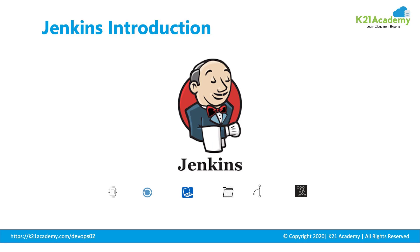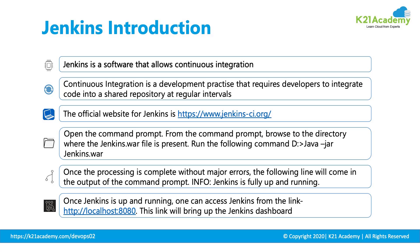Continuous integration is the process of converting your source code into a compilation process so that it generates an artifact. That is called continuous integration. There are a variety of tools designed for continuous integration, such as Jenkins, Azure DevOps, TeamCity and Bamboo. A lot of other tools are available in the market, but the most famous one is Jenkins — and we are going to see why in this session.